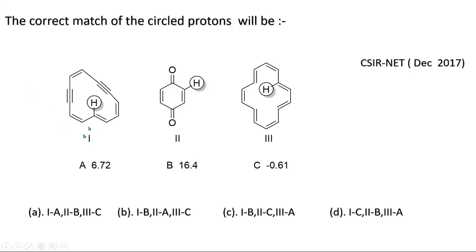In molecule number one, we have six pairs of π electrons, which is 12 π electrons. 12 π electrons are antiaromatic, and an antiaromatic compound generates a paramagnetic ring current. This means the inner proton will be much more deshielded than outer protons — that's why this proton is coming around 16.4 ppm.